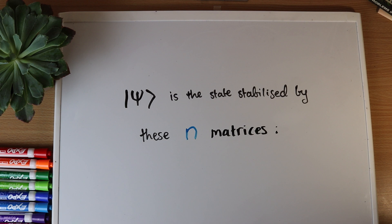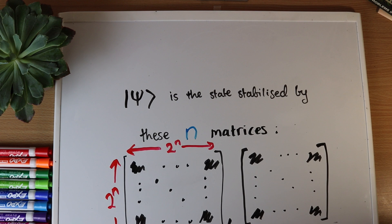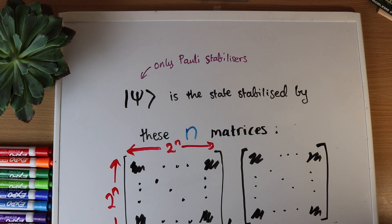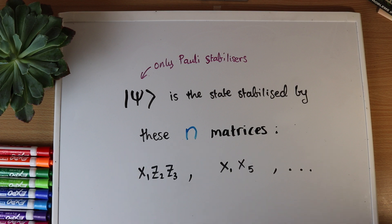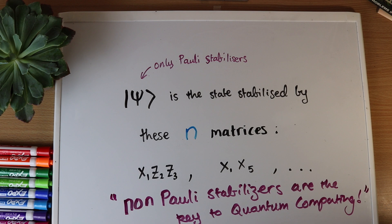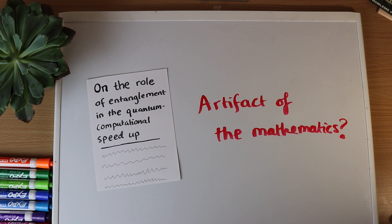But we could write the state another way — for example using what's called the stabilizer formalism. Then restricting something else, in this case the number of non-poly stabilizers, is what makes the state dramatically simplify. Now it looks like having non-poly stabilizers is the key resource of quantum computing. What you actually want is something that looks important independent of what mathematical formalism you use. So entanglement may be what's important, but it may just be an artifact of the formalism we chose.